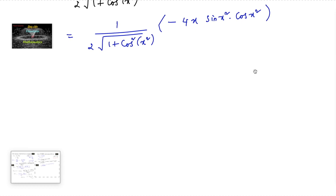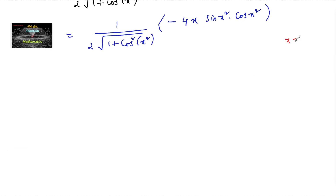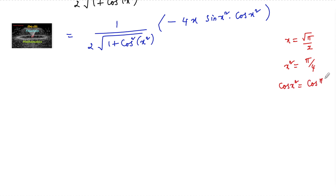At x = √(π/2), we have x² = π/4. So cos(x²) = cos(π/4) = 1/√2, and sin(x²) = sin(π/4) = 1/√2.